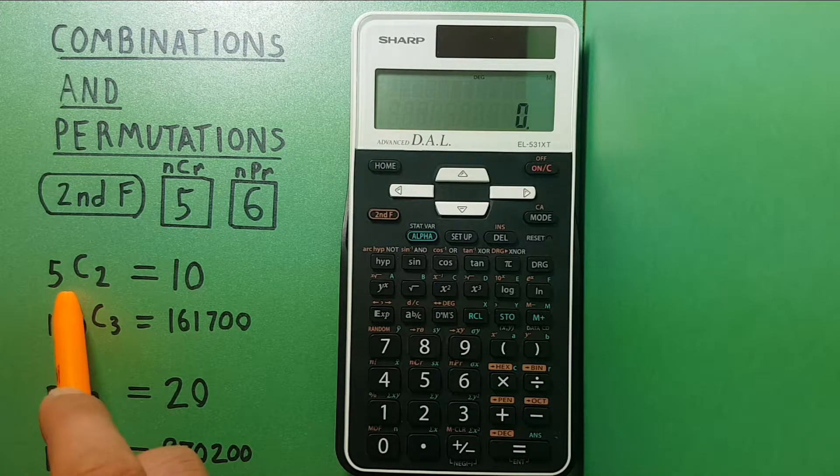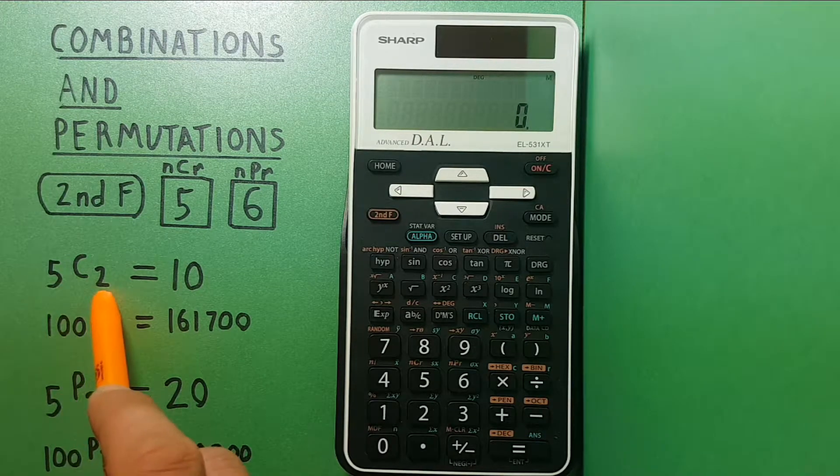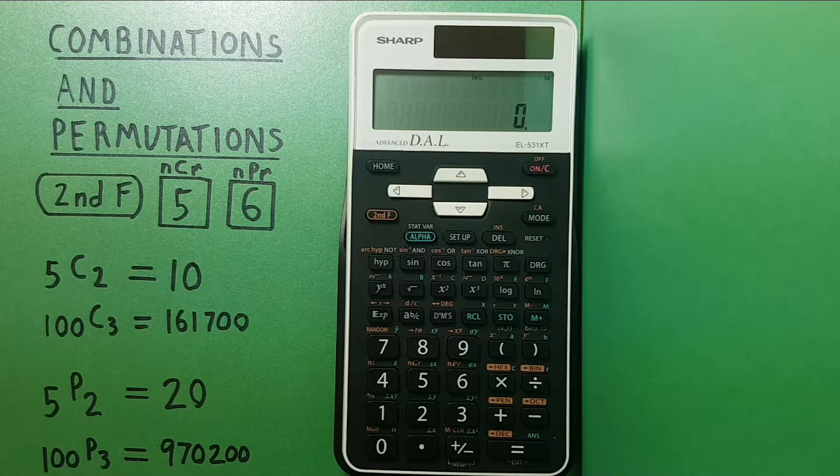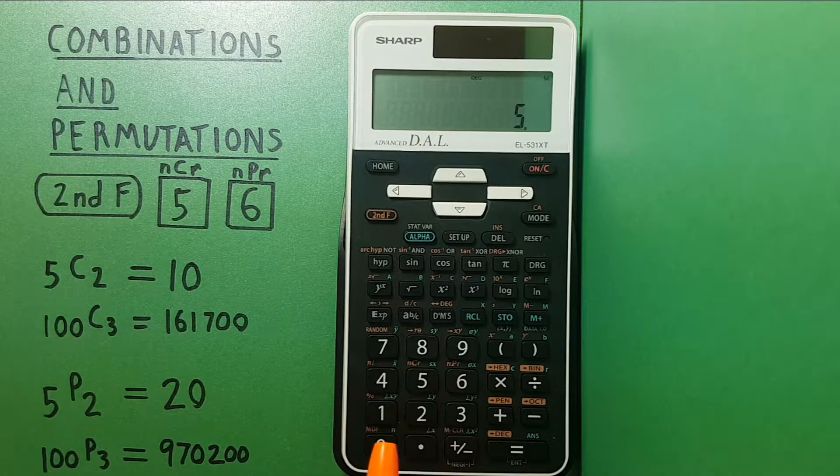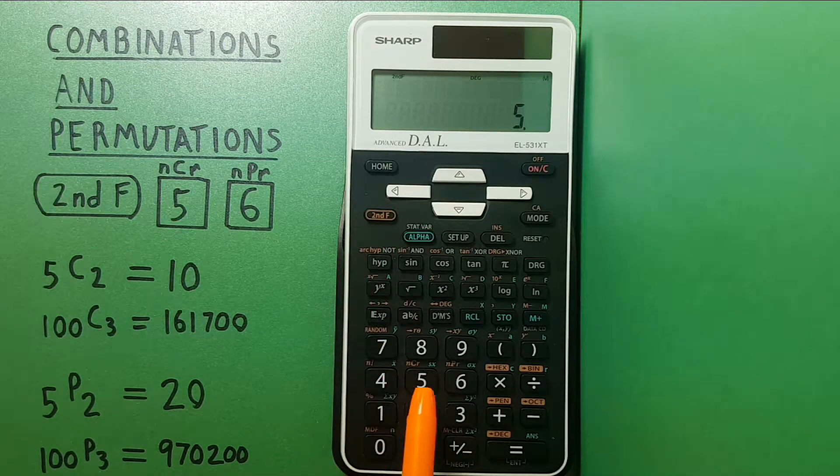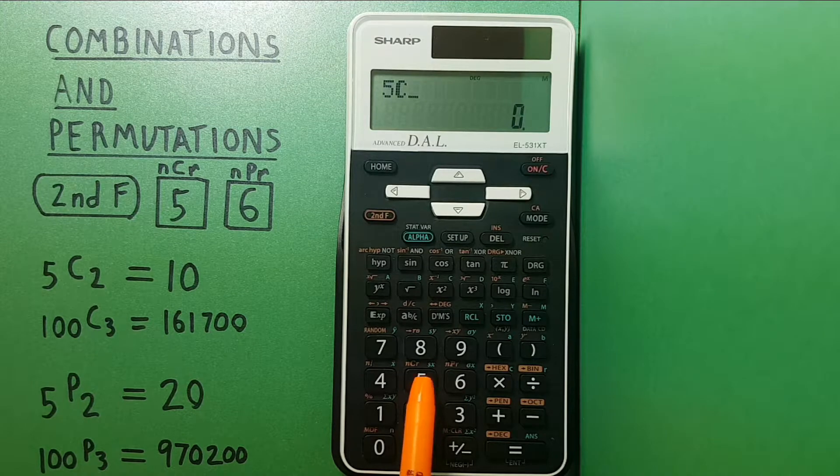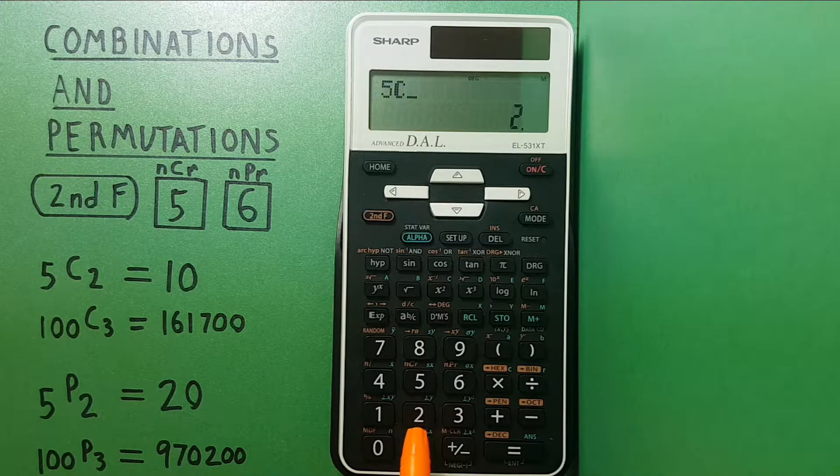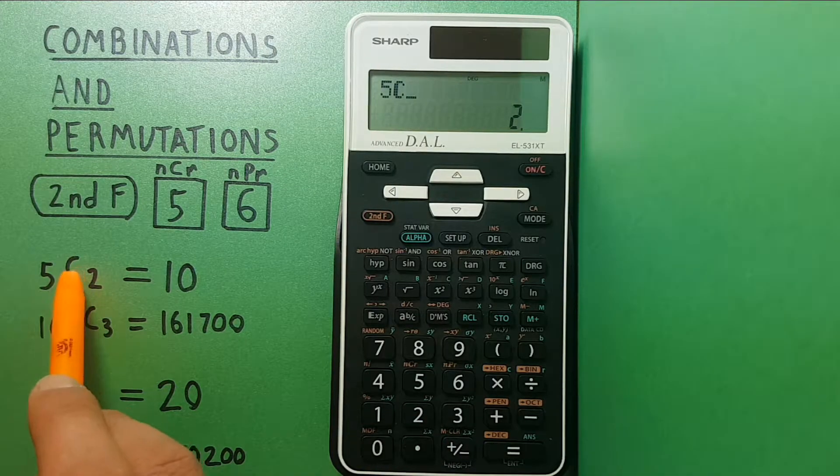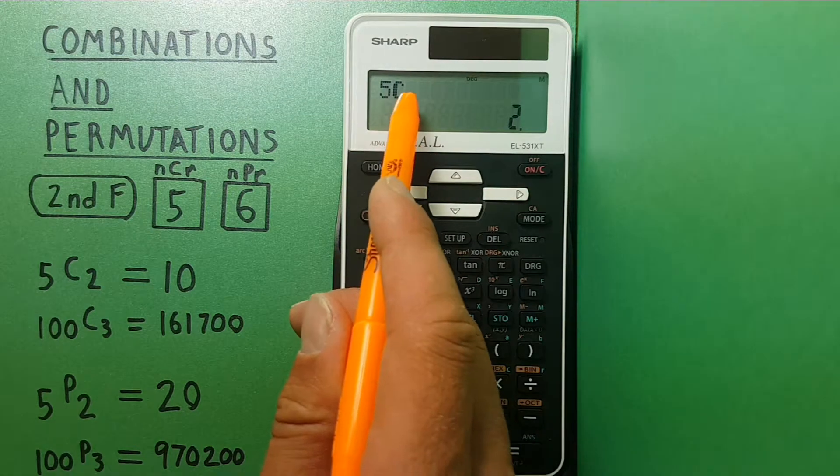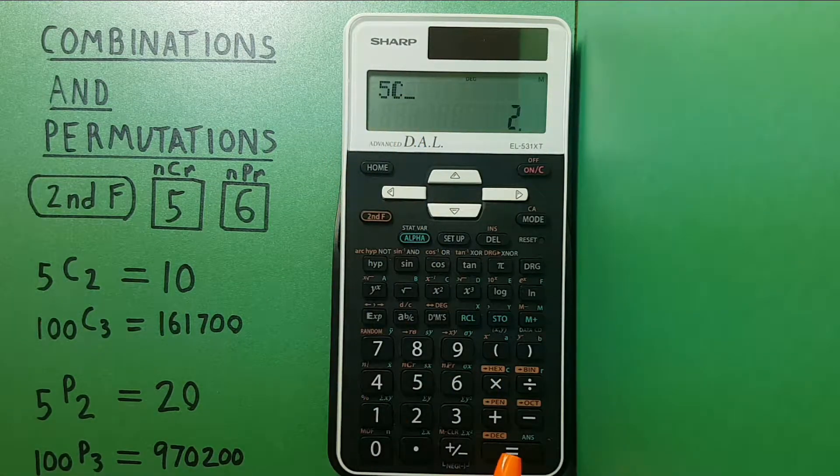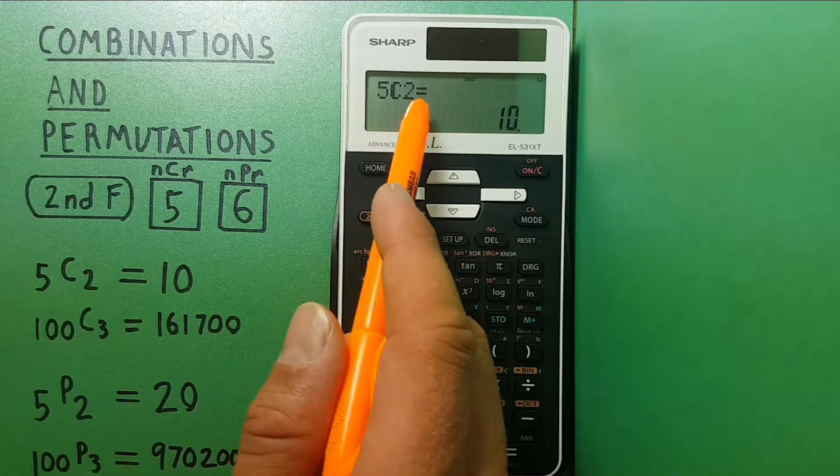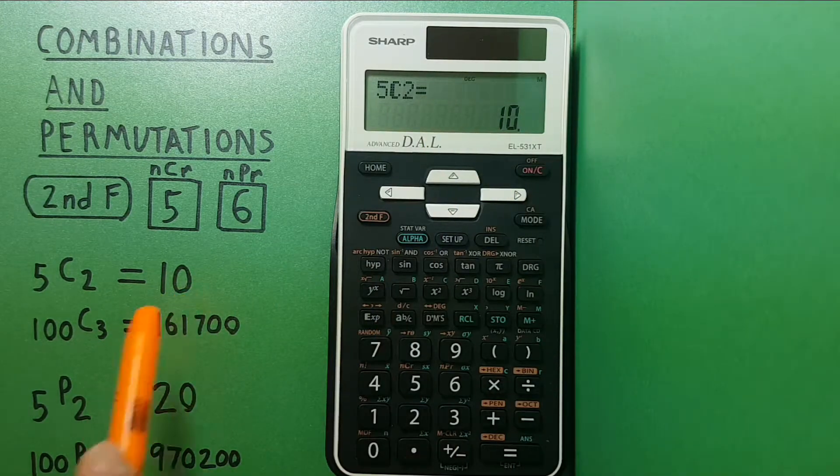So if we have five objects and we want to choose two, and the order doesn't matter, we can find this by entering five, then second function five to get the NCR or combination function, and then two. So five choose two—you can see the C up there which indicates combination—then equals. Five choose two equals ten, which is the right answer.